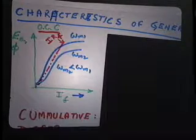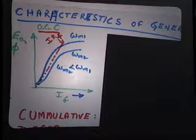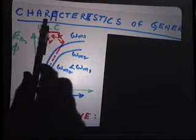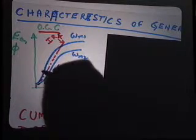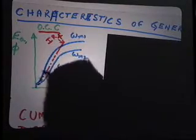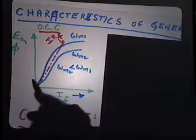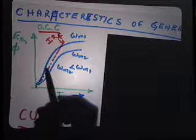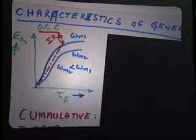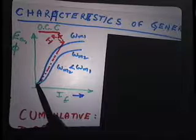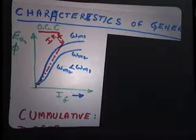If the field resistance is greater than the critical resistance, there is no intersection with the OCC curve, and you land up with only a few millivolts — essentially no useful voltage. The generated voltage in a shunt machine depends upon the speed and also upon the resistance of the field circuit. You can add an extra resistance to control this. That is why it is called the critical resistance for self-excited generators.